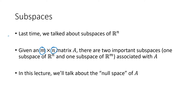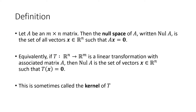In this lecture we're going to be talking about the null space. The null space of a matrix A, written null A, is the set of all vectors in Rn — the vectors have to have the same number of entries as the number of columns of A — and a vector gets in the null space if, when I multiply that matrix by that vector, I get the zero vector.